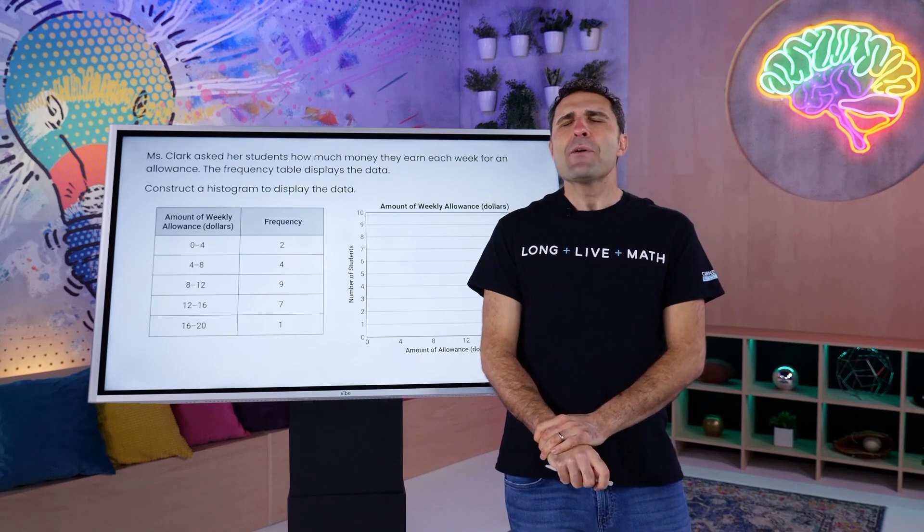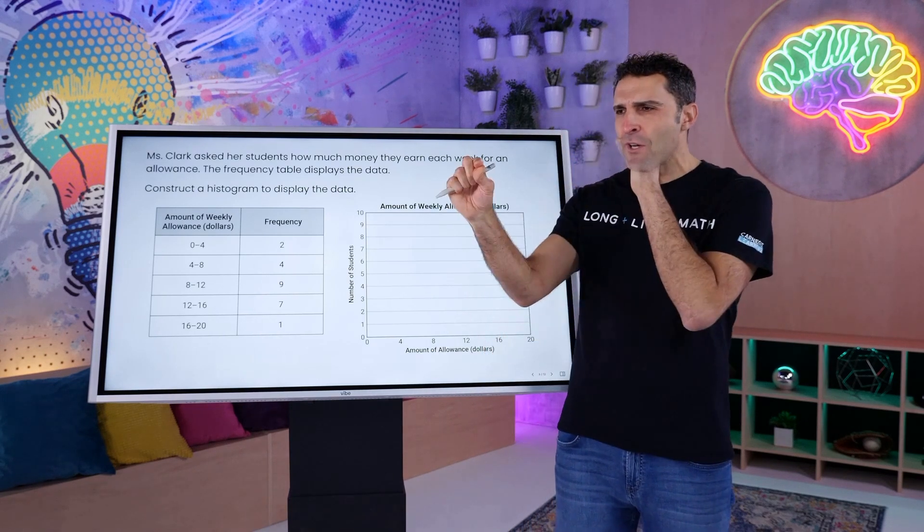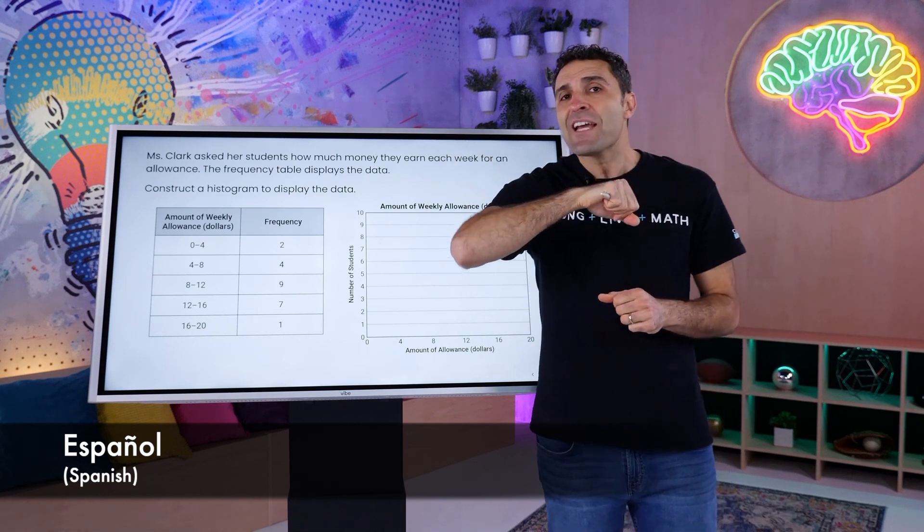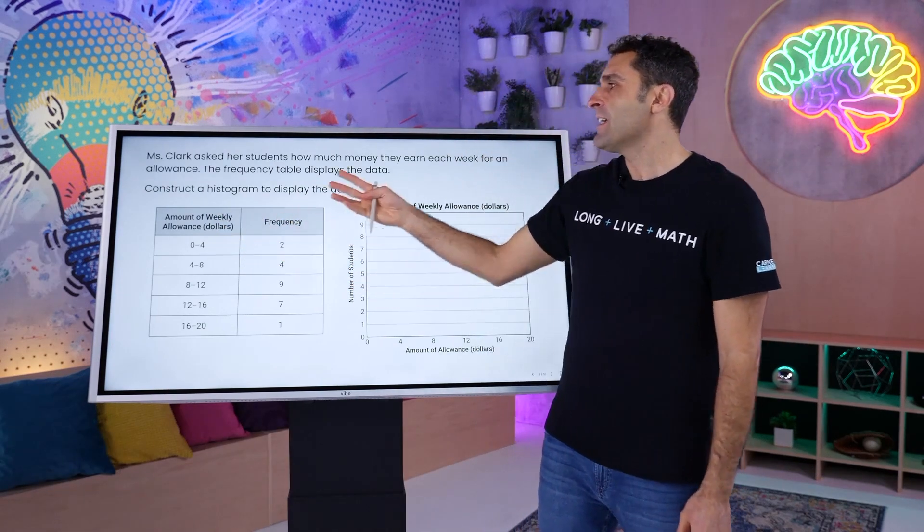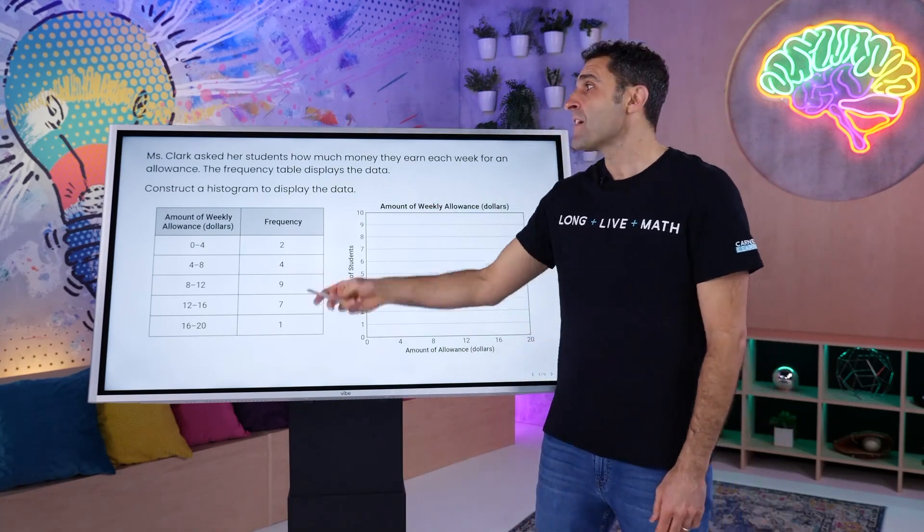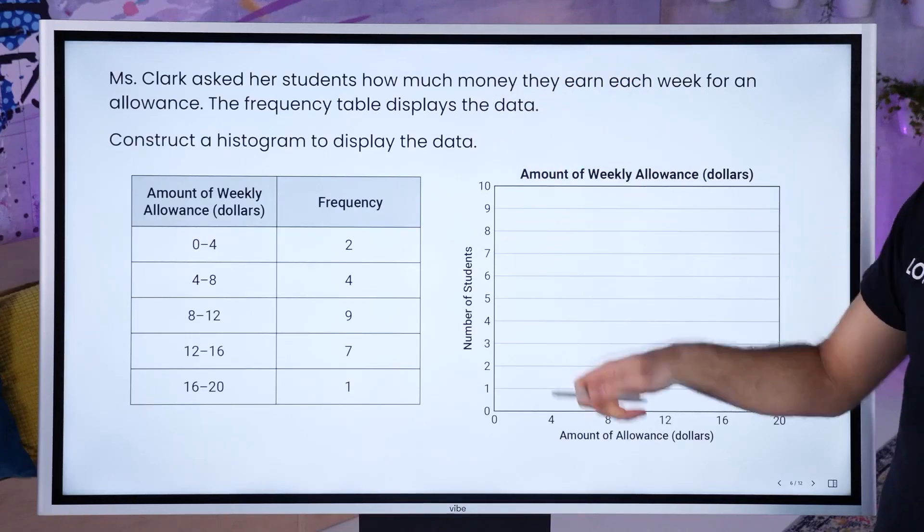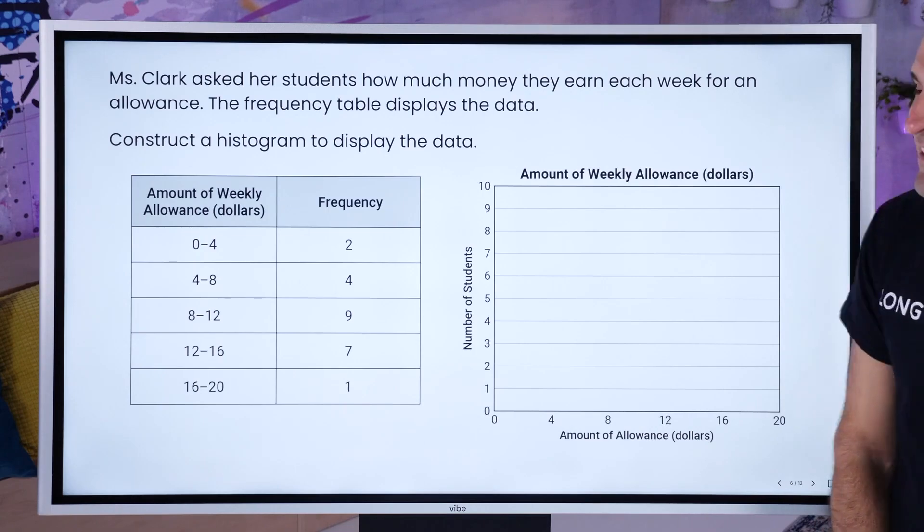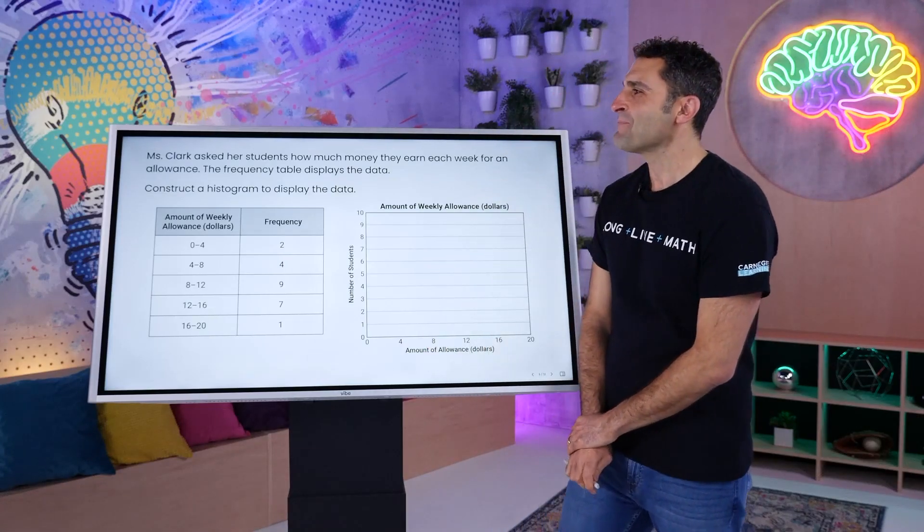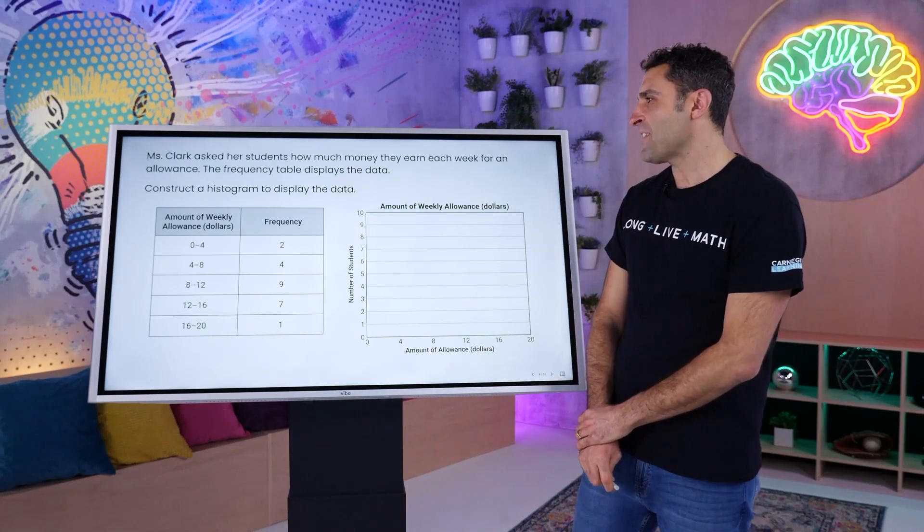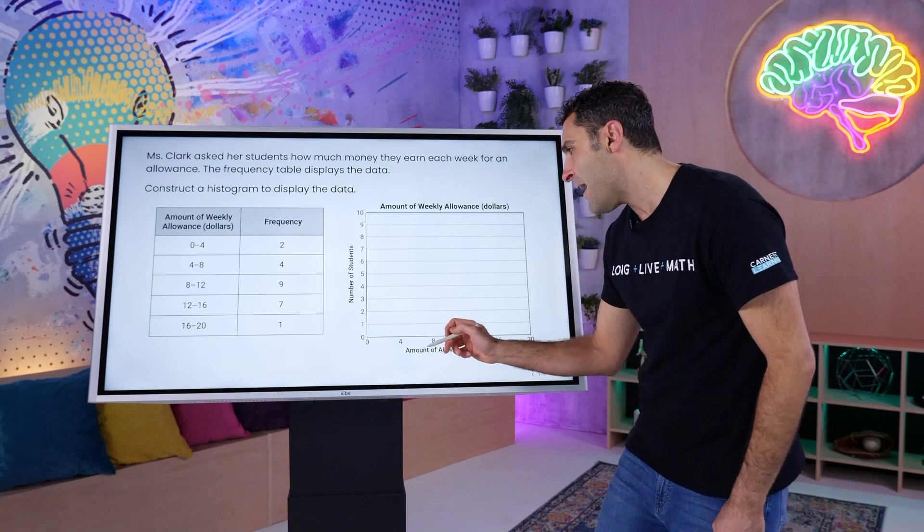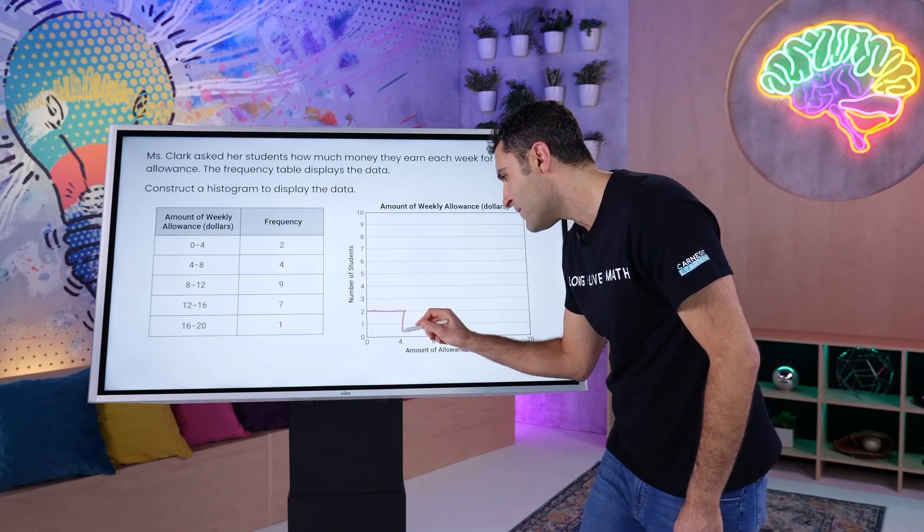Bienvenido nuevamente a la sección de construcción de datos. Leeremos sobre la señora Clark. Después construiremos un histograma y hablaremos sobre su significado. Señora Clark le preguntó a sus estudiantes cuánto dinero ganan cada semana como asignación. La tabla de frecuencias muestra los datos. Correcto. Los maestros construyen un histograma para mostrar los datos. Vamos a hablar sobre eso. Cero a través de cuatro, cuántos son dos. Ahí tienes.